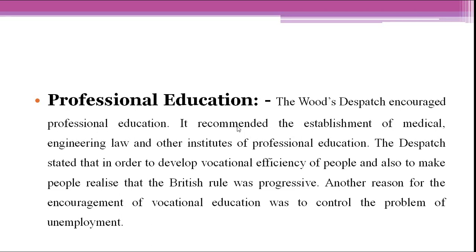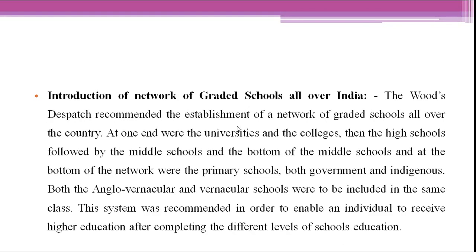Lastly, the dispatch recommended the introduction of a network of graded schools all over India. At the top were universities and colleges, followed by high schools, then middle schools, and at the bottom primary schools — including both government and vernacular schools. Both vernacular and English languages were to be included in the same class. This network was similar to the present system of Class 1 to 10, then 10 to 12, then graduation.